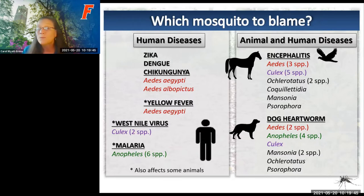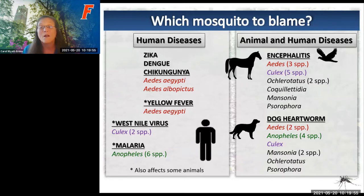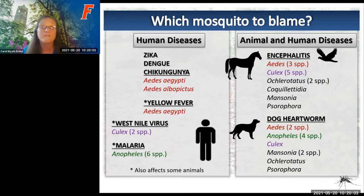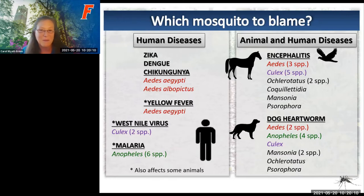One really important thing to know about all of these diseases is that there are no human vaccines, except for yellow fever. There are equine vaccines for the encephalitises, but no human vaccines. So control is through prevention and reduction of the adult female mosquito—which we'll discuss throughout this presentation.